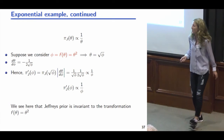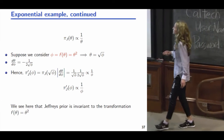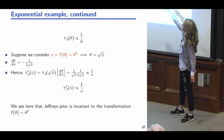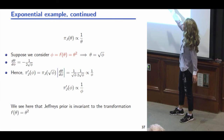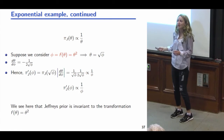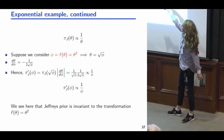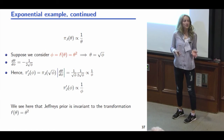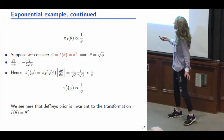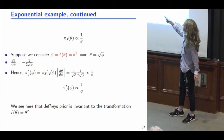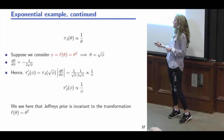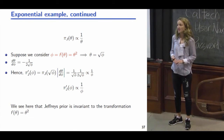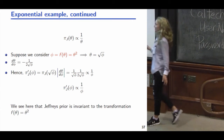What's nice about Jeffrey's prior is that it's invariant to one-to-one transformations. If we have a new parameter phi that is theta-squared, we can work out what the Jeffrey's prior is for phi using the Jacobian technique. It turns out the Jeffrey's prior for the transformed random variable is the same as what we had originally — that's a desirable property, at least according to statisticians.